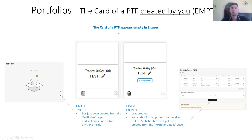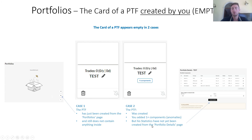The card of a portfolio appears empty in two cases. Case one: if the portfolio has just been created from the portfolios page and still does not contain anything inside. Second case: the portfolio was created, you added one or more components (anomalies), but its statistics have not yet been created from the portfolio details page.